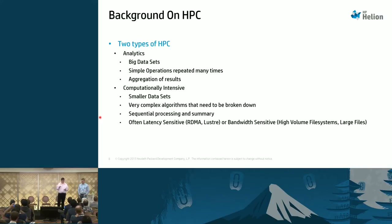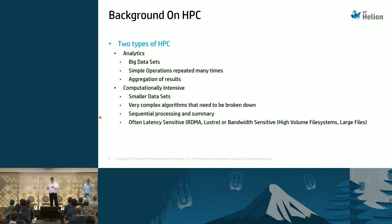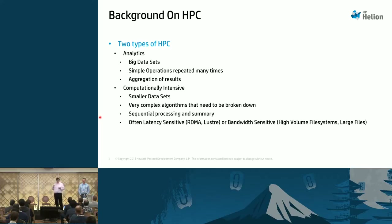The other type of HPC is computationally intensive stuff. This tends to involve smaller data sets pushed through very complicated algorithms, typically in a pipeline — you do some processing, take the results and process again until you get to the end result. It's sequential processing, often what we call embarrassingly parallel where you can break it up and run across many nodes. For grid computing type operations, it's often latency sensitive — you want high-performance networking, high-performance compute, and high-performance storage at the back end.